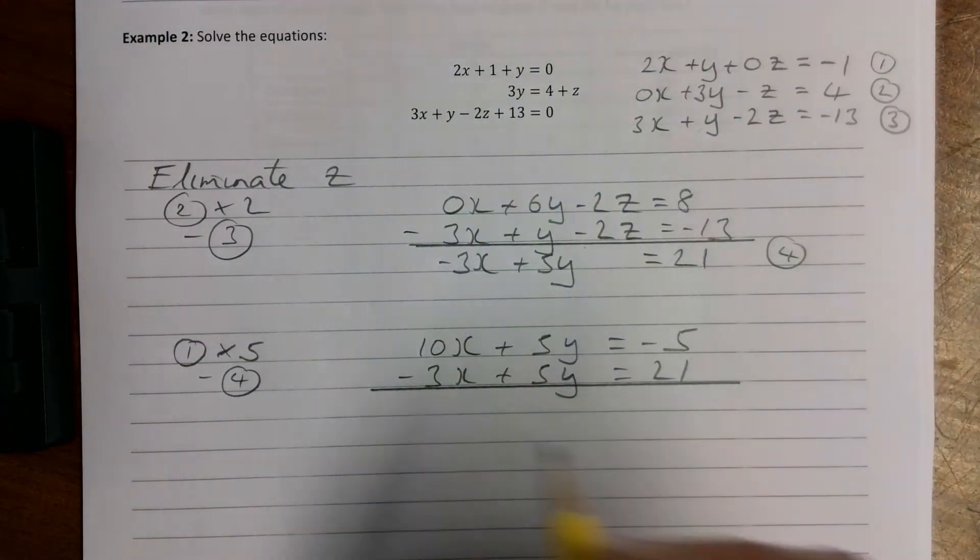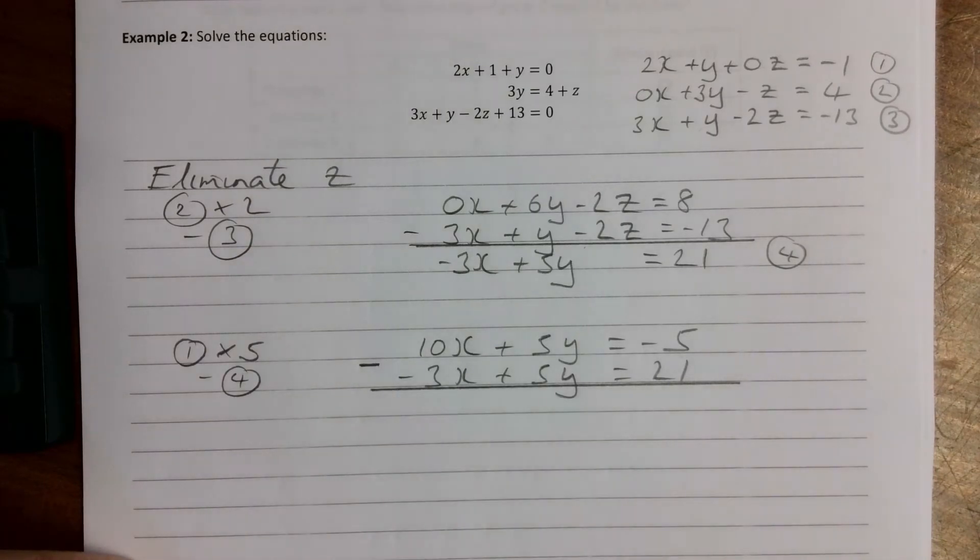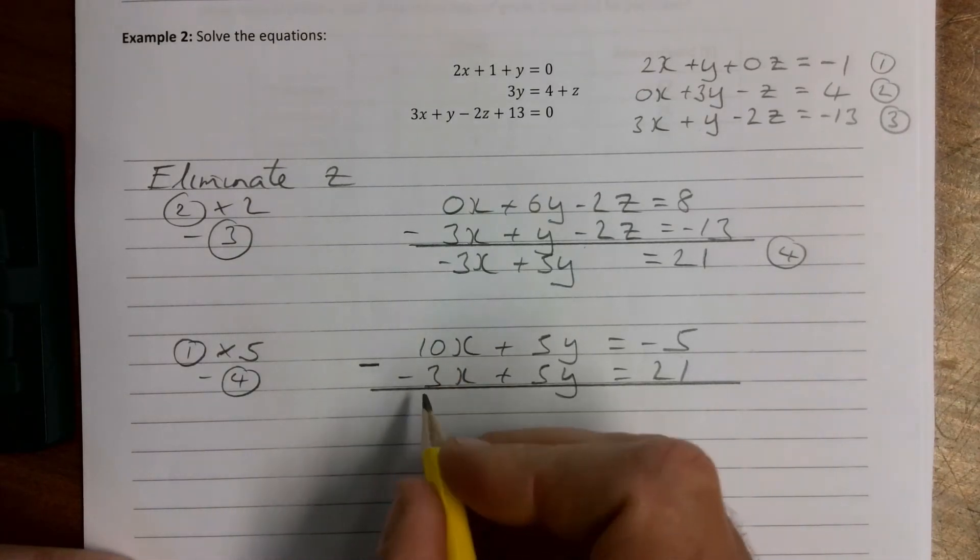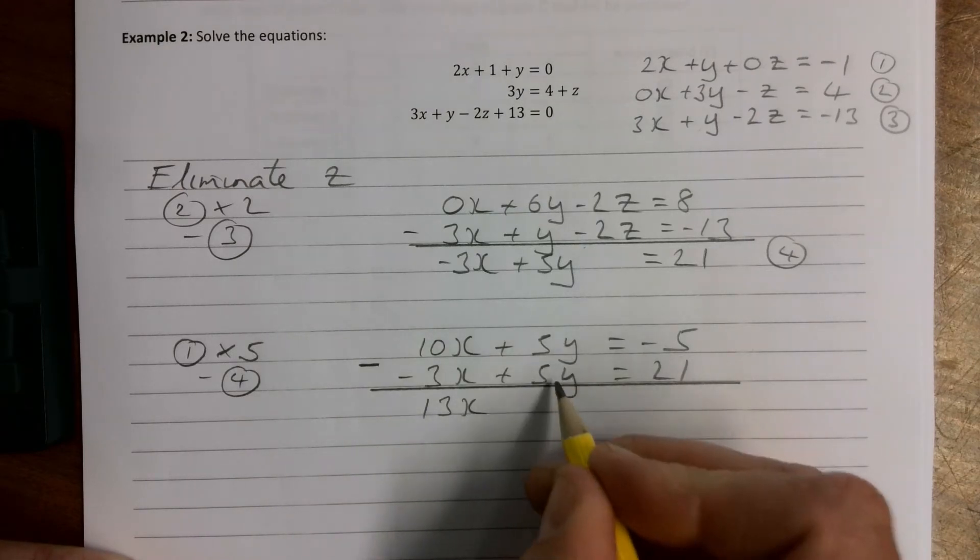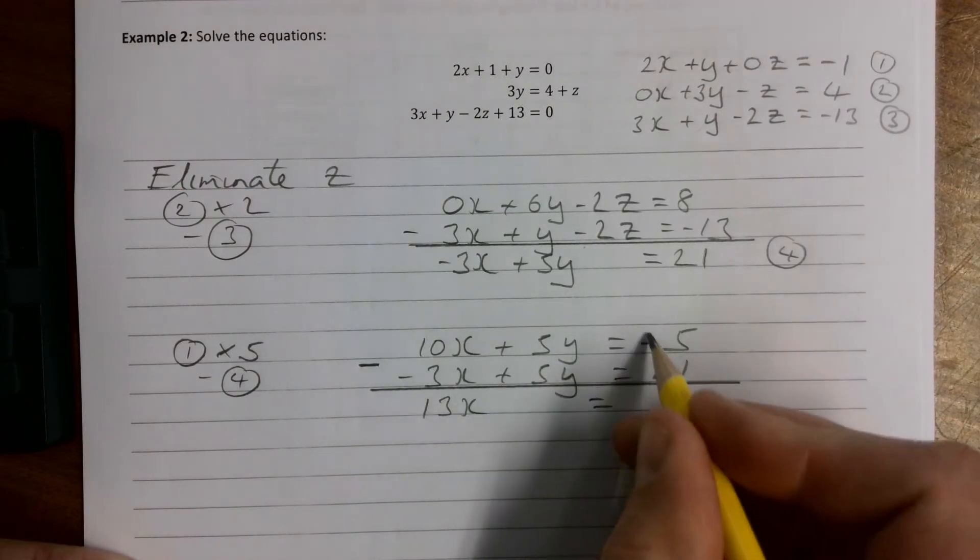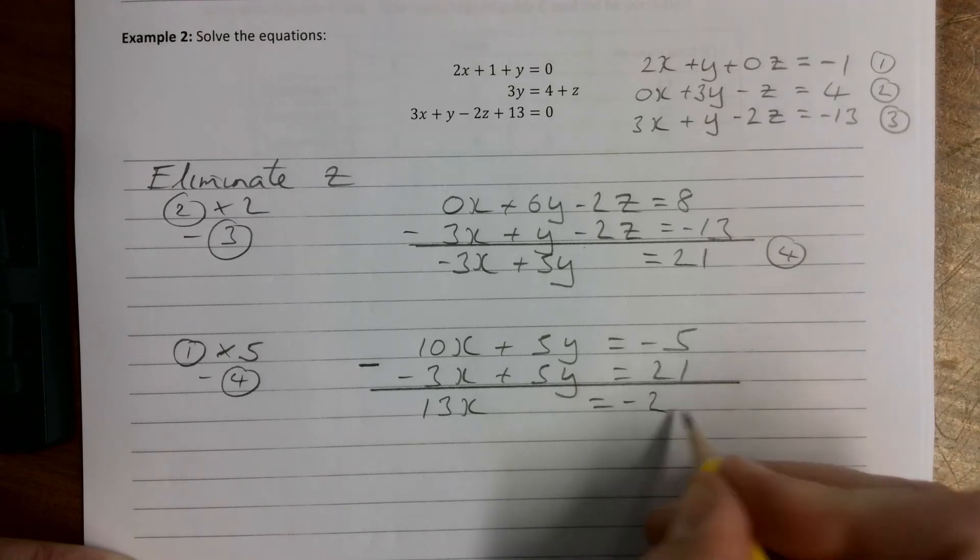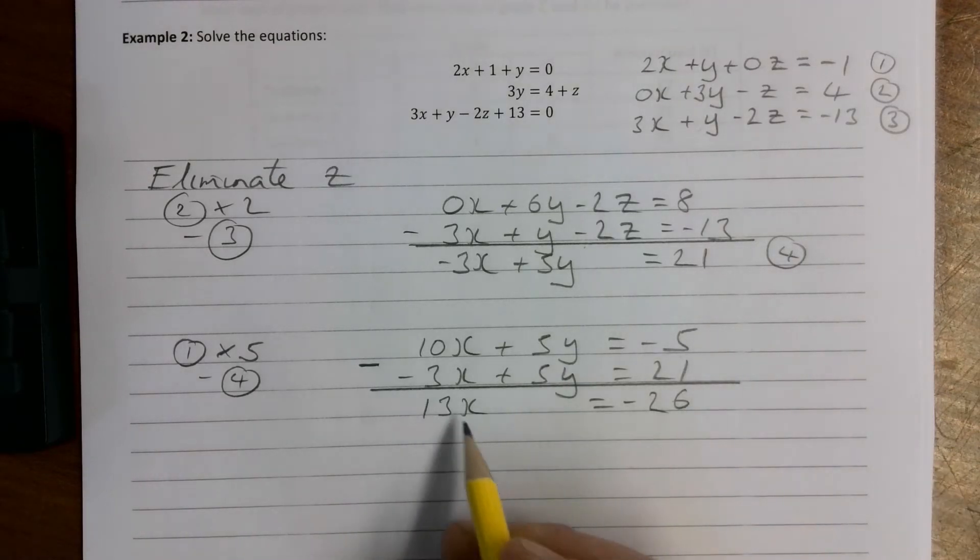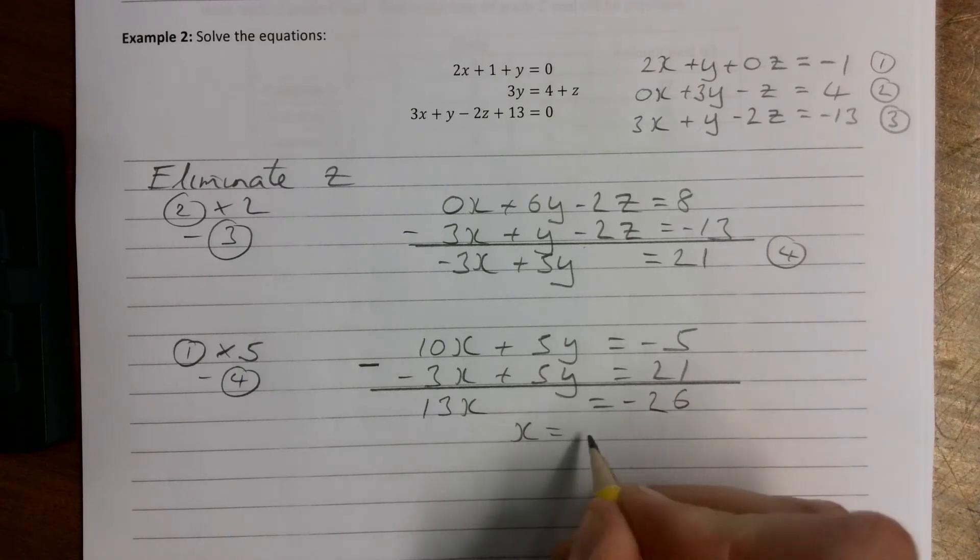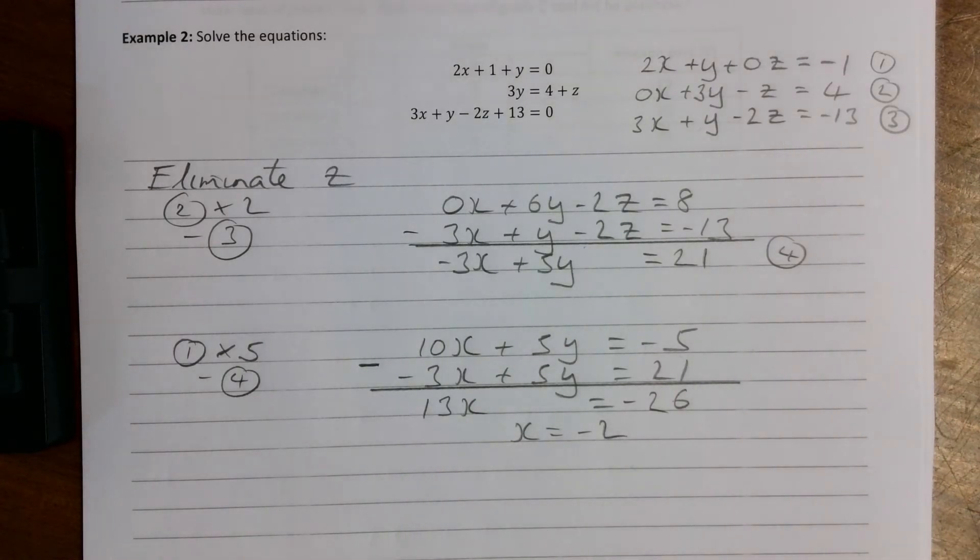Subtract them here: 10 minus minus 3 is 13x, 5y take away 5y disappears, minus 5 minus 21 is minus 26. And it's always encouraging when this number divides into this number, so that gives us x equals minus 2.